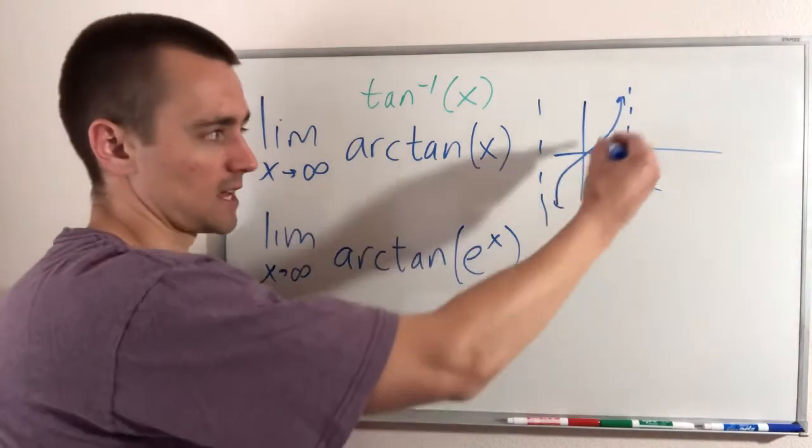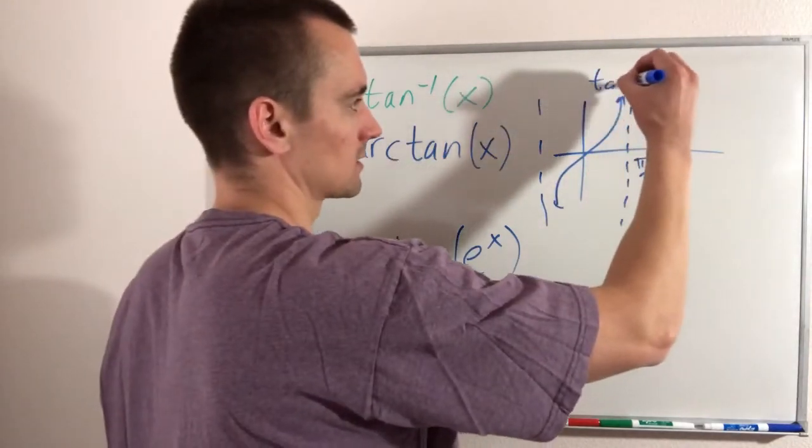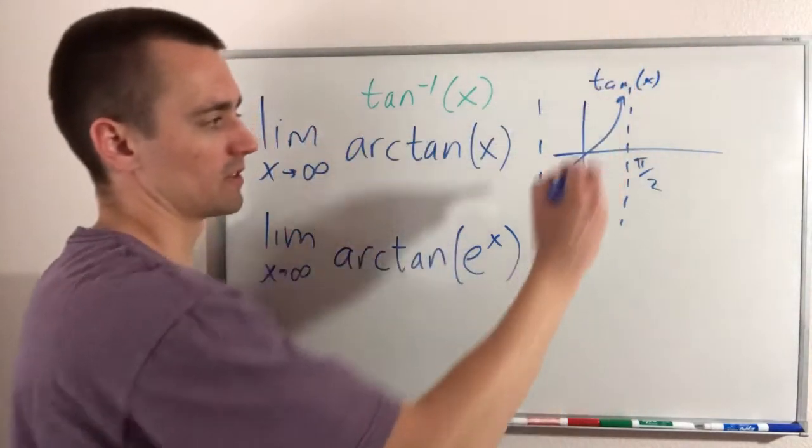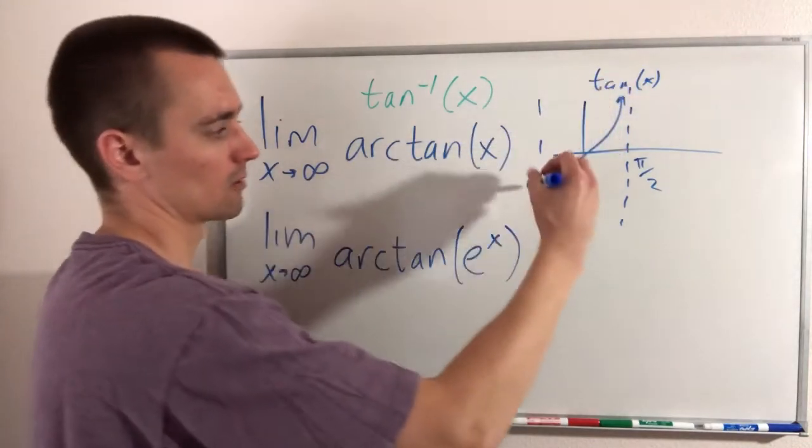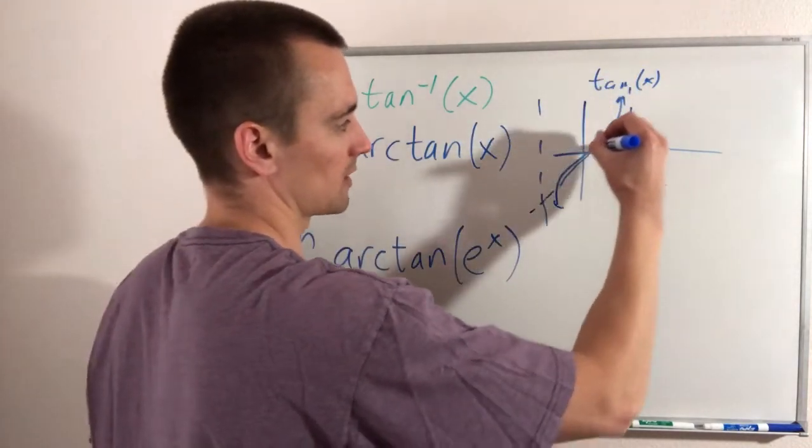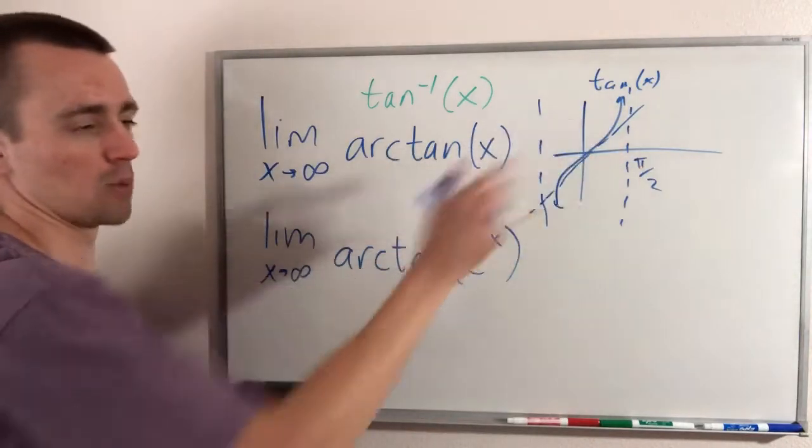So what the inverse of tan x would look like, this is tan x, the inverse of this would reflect along this 45 degree angle and point sideways.